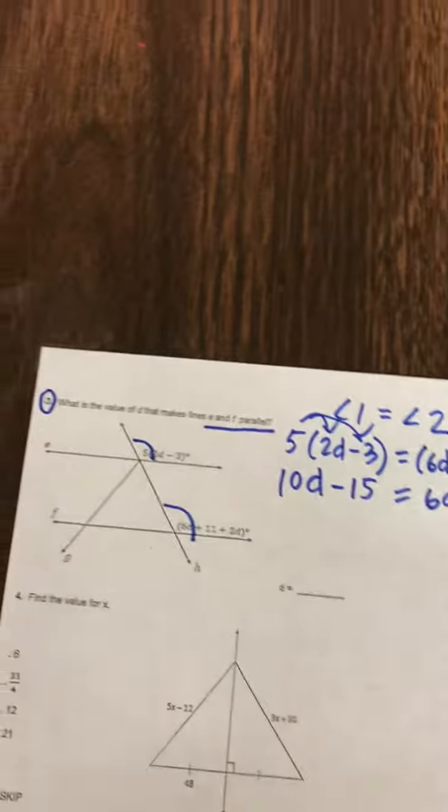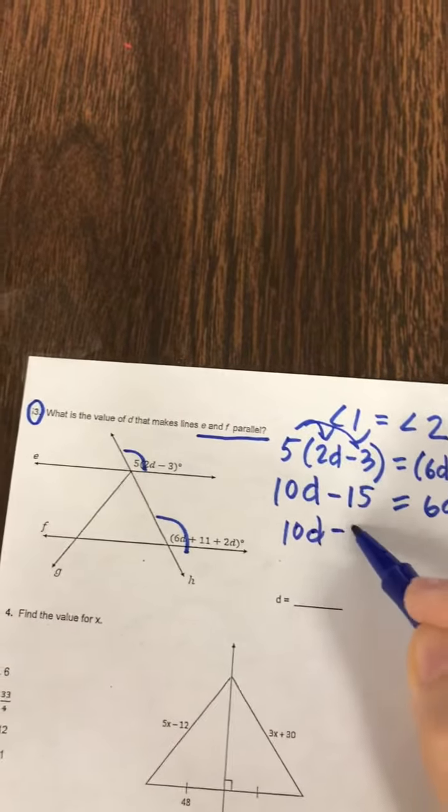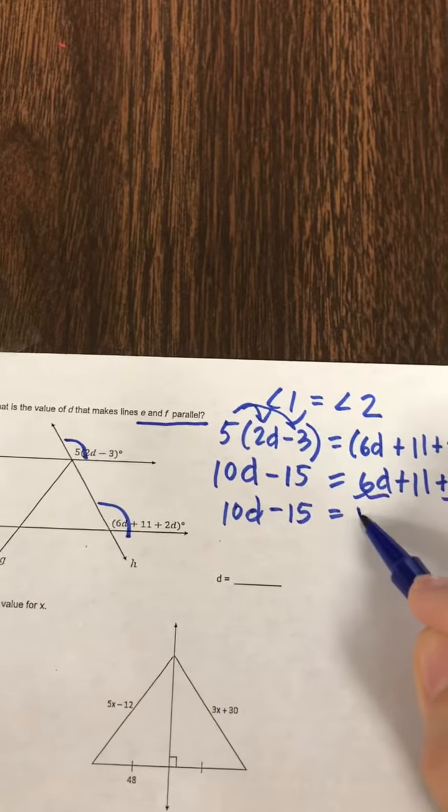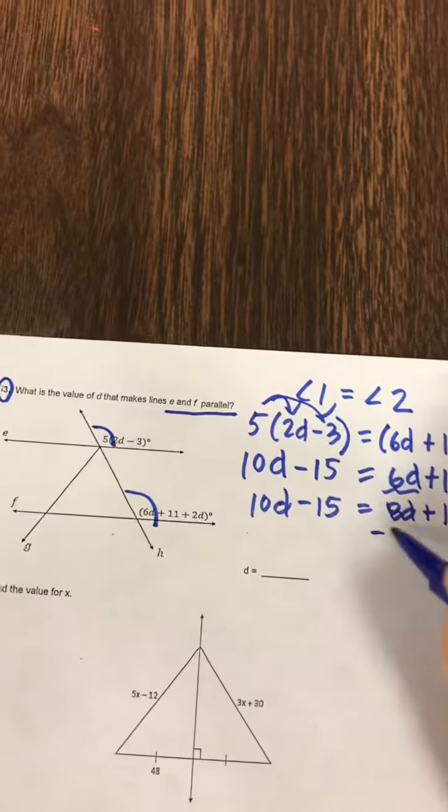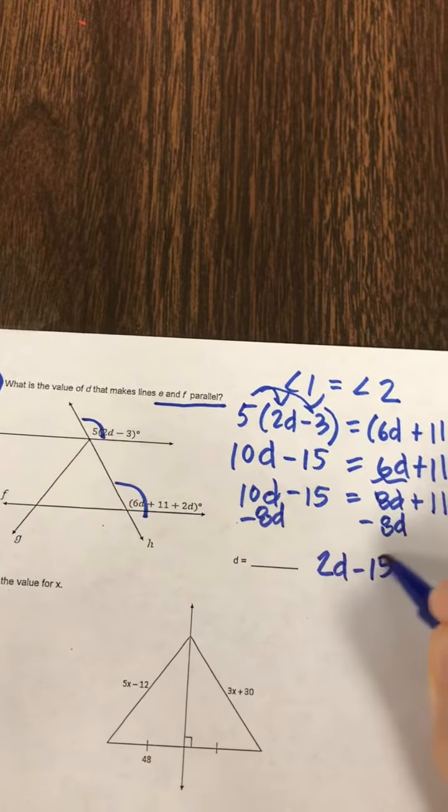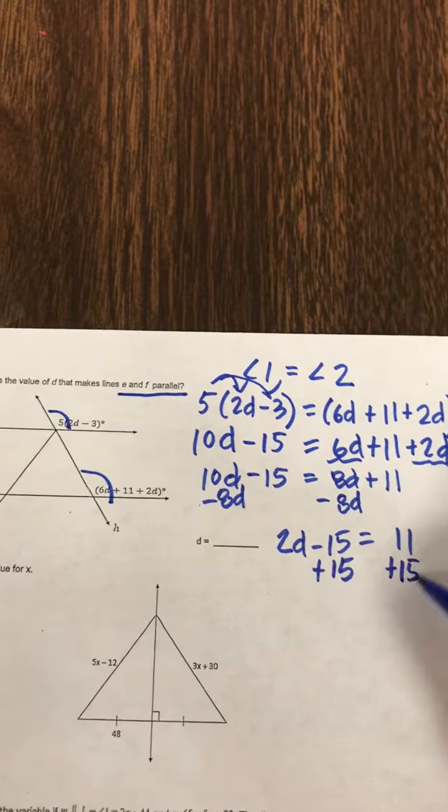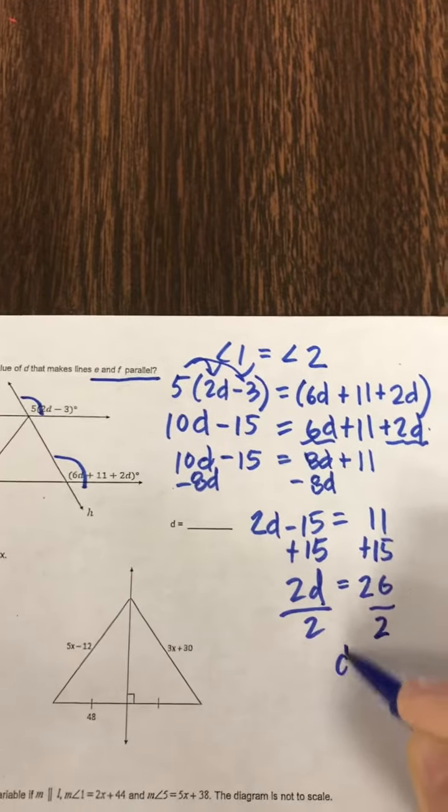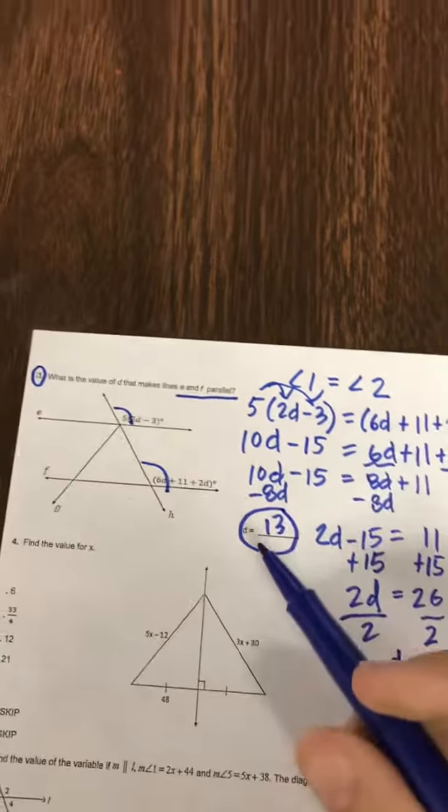We distribute. We need to get all the D's on one side. So I'm actually going to combine these two D's on this side, 6D and 2D, to make 8D. And then send that D over there. So 2D. Now I need everything on this side.